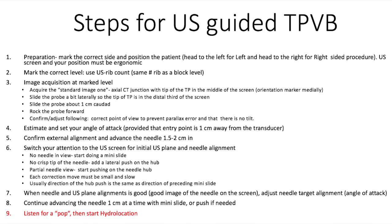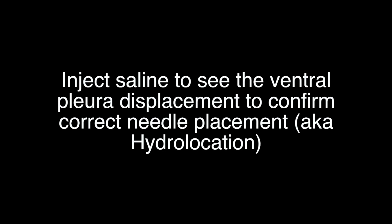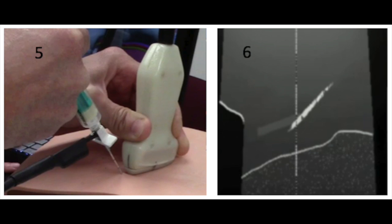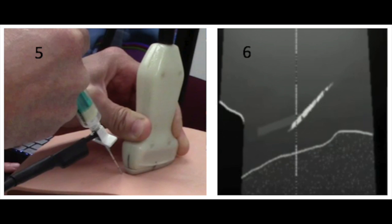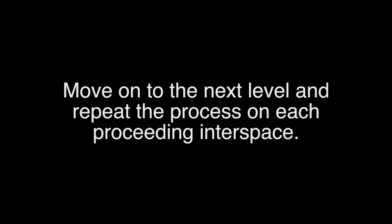Listen for a pop and then start hydro-location. Inject saline to see the ventral pleural displacement to confirm correct needle placement. Finally, move on to the next level and repeat the process on each preceding interspace.